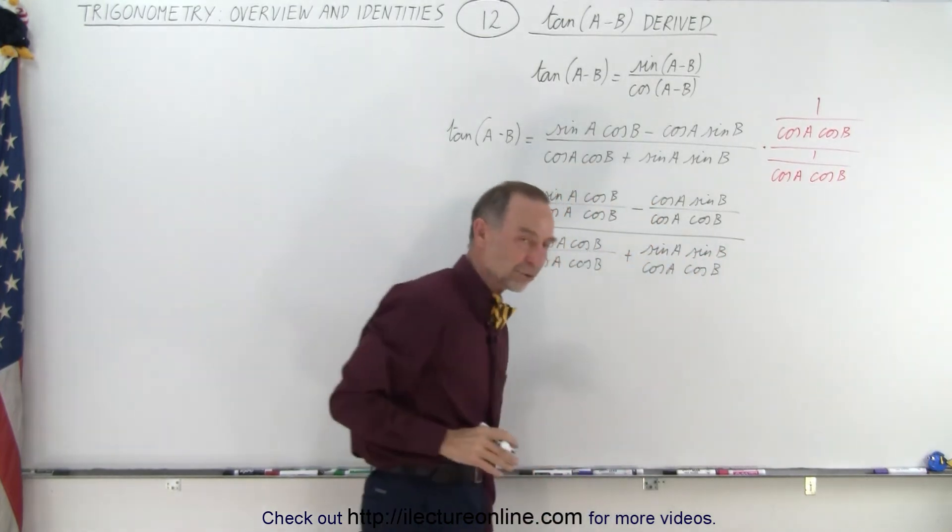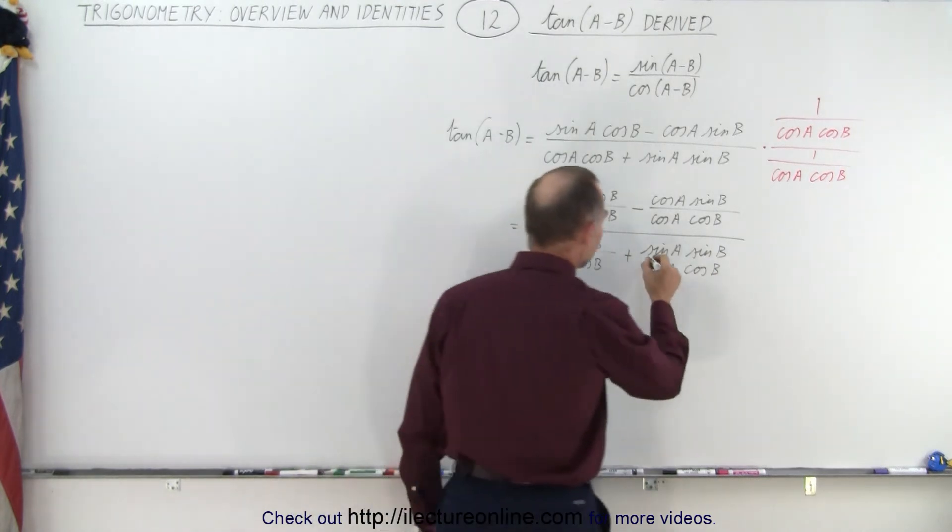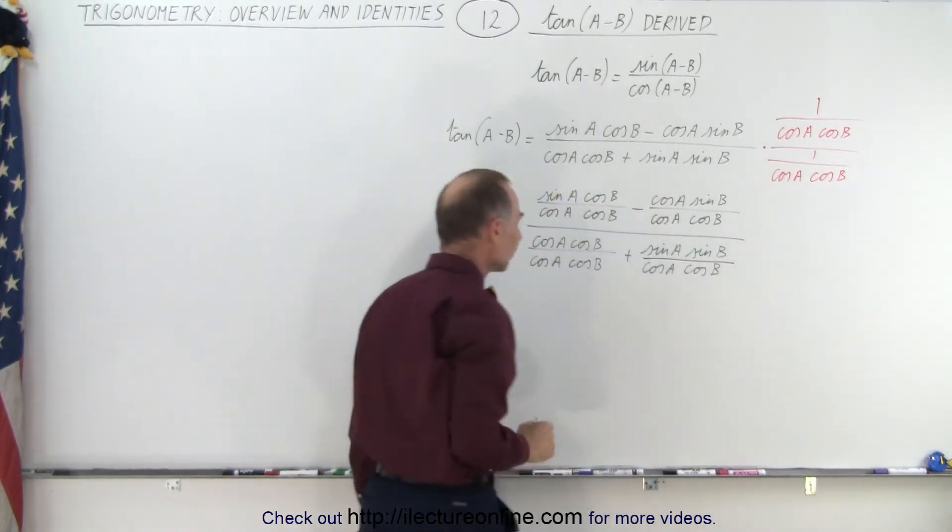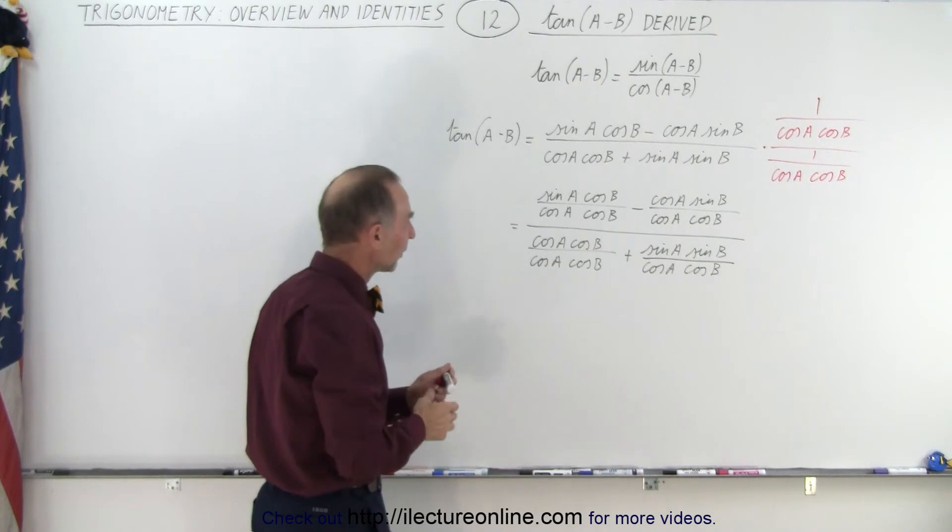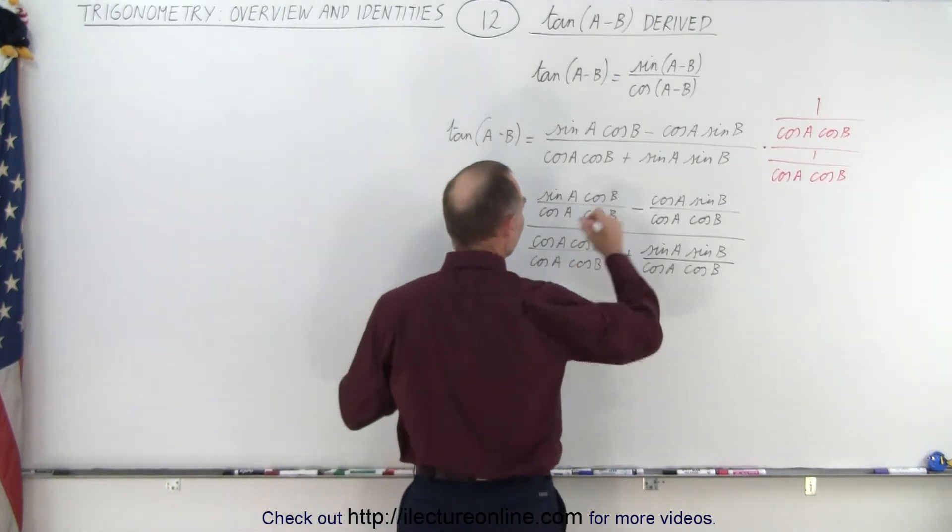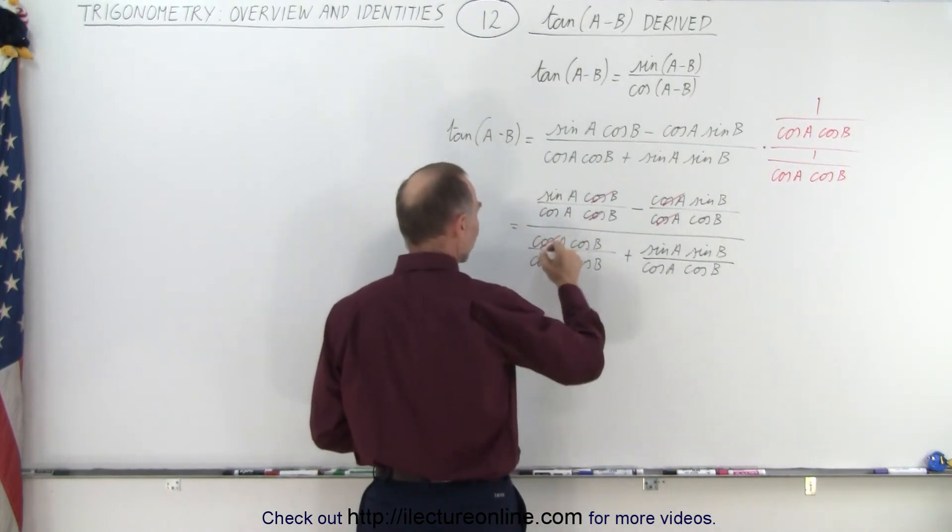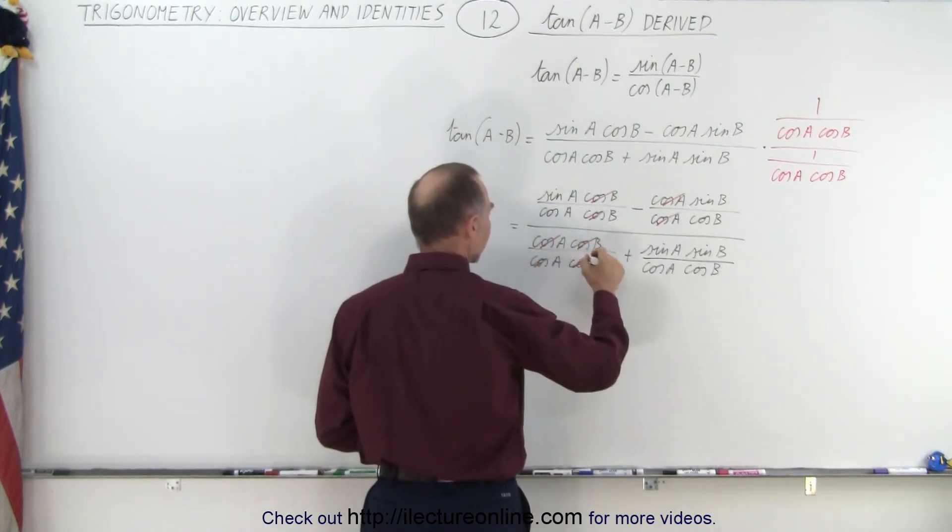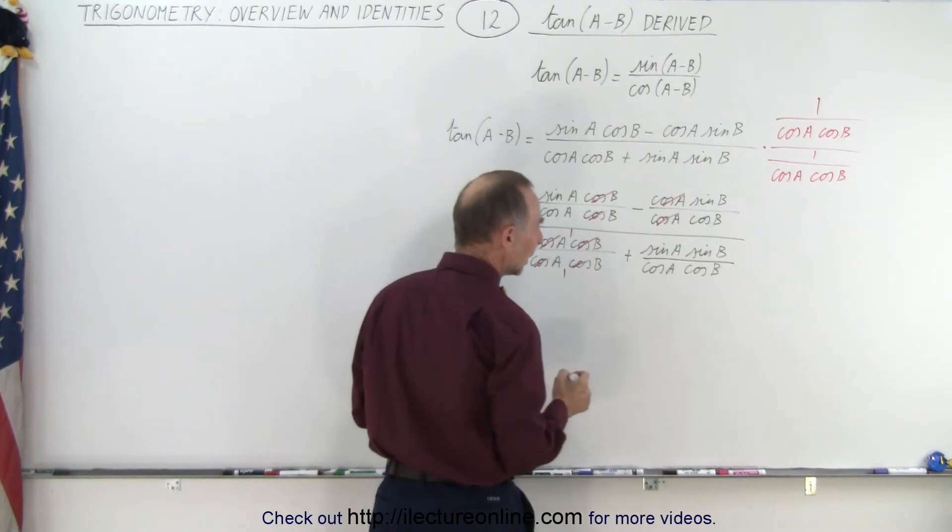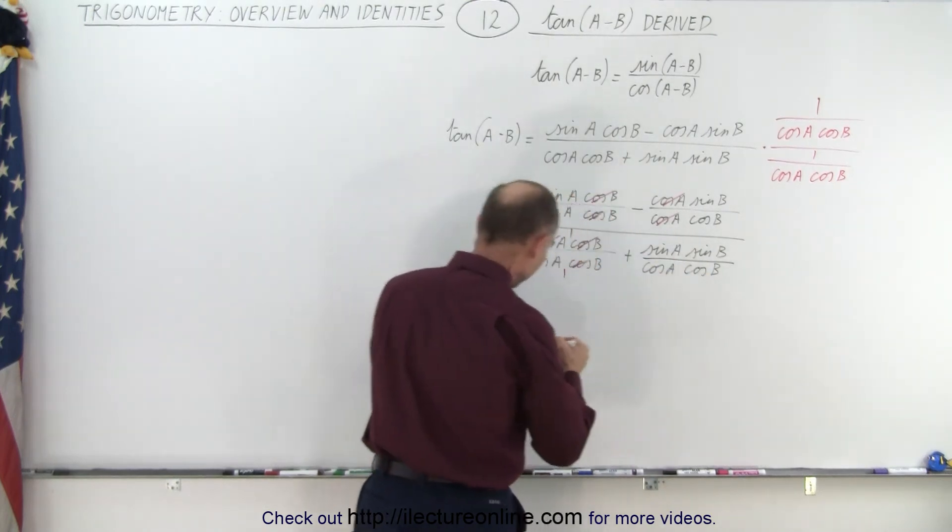So notice we used the exact same trick. It doesn't matter if it is the sum or the difference of two angles. Now we can have a little bit of fun. Notice we have the cosine of B that cancels out here, we have the cosine of A that cancels out here, we have the cosine of A that cancels, the cosine of B that cancels, and we're left with one over one. And here nothing cancels.